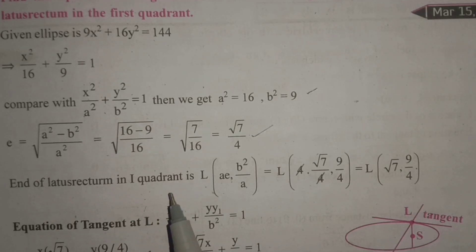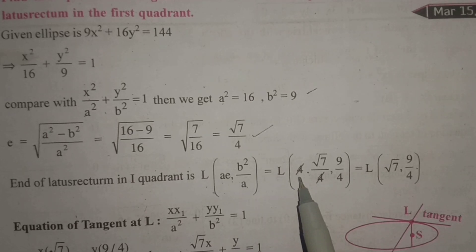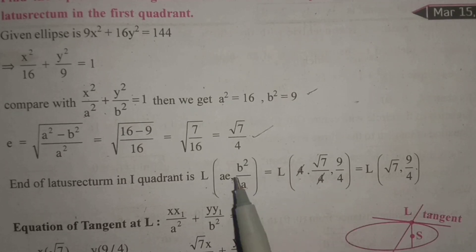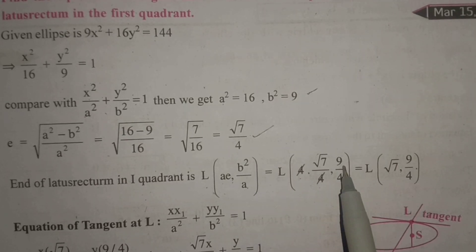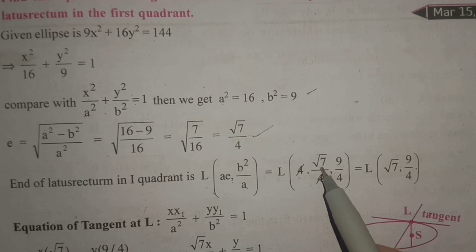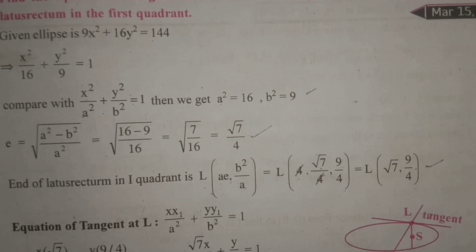The end points of the latus rectum in the first quadrant are given by (ae, b²/a). Substituting: a equals 4, e equals √7/4, so ae equals 4 times √7/4 equals √7. And b²/a equals 9/4. So the point L is (√7, 9/4).